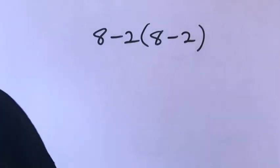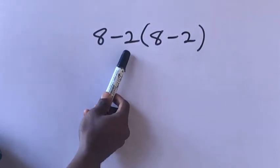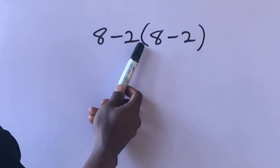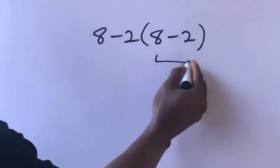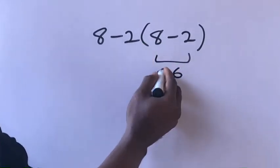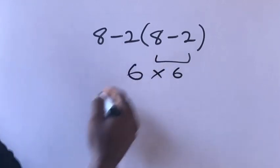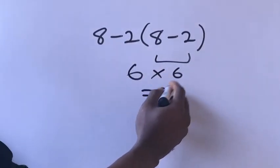Hi guys, welcome back to my channel. Eight minus two times eight minus two. Eight minus two equals six, times eight minus two equals six. Six times six equals 36.